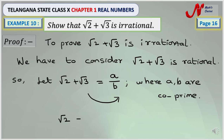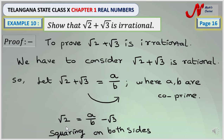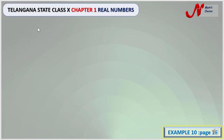This equation can be written as √2 = a/b − √3. To solve this equation, we square both sides, so it can be written as (√2)² = (a/b − √3)².